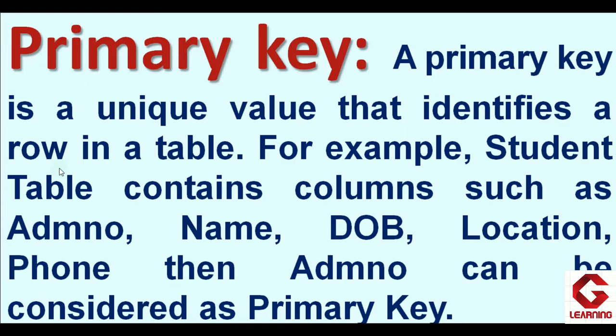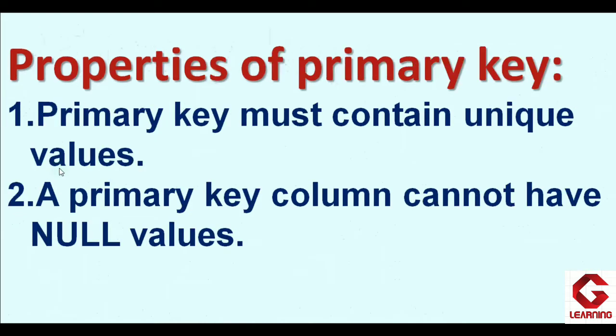I am not selecting name, date of birth, location, or form as the primary key for certain reasons, which you will understand from the properties of the primary key. The first property is: if a particular field is mentioned as the primary key, then that field must contain a unique value — meaning the same value cannot be repeated or entered again in that column.